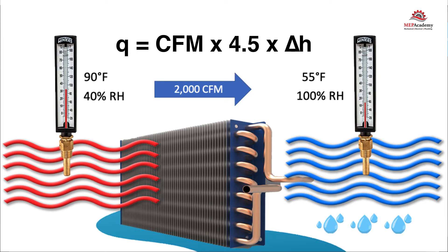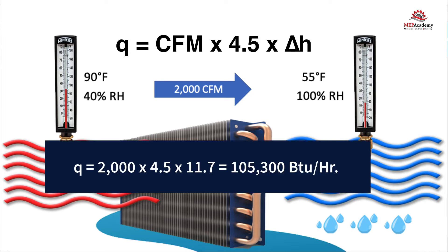We get Q equals 2,000 times 4.5 times 11.7 equals 105,300 BTUs per hour.